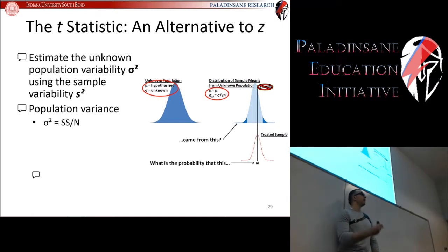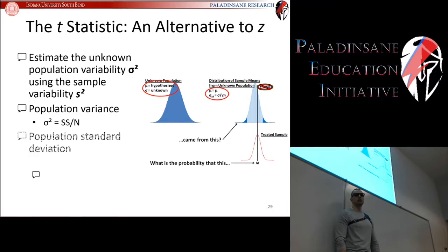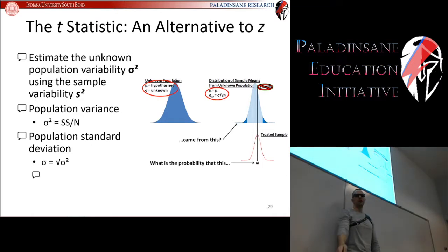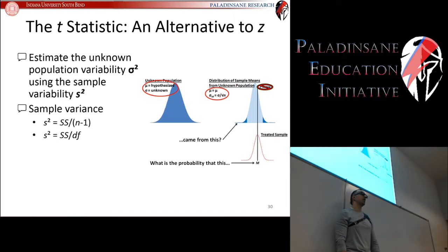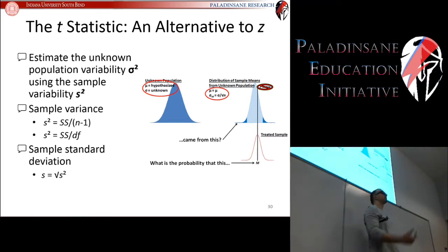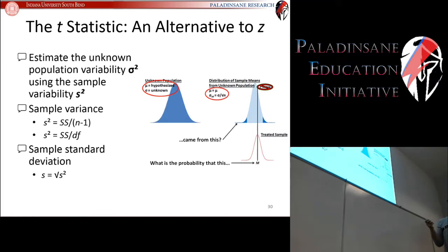Population variance is defined as the sum of squared deviations divided by the size of your population. Sample variance is the sum of squared deviations divided by the sample size minus one — remember, it has that correction. That correction is called degrees of freedom, and that's what we're going to be using instead of the population variance. Degrees of freedom equals the size of your sample minus one, and it's going to pop up over and over in the coming weeks.